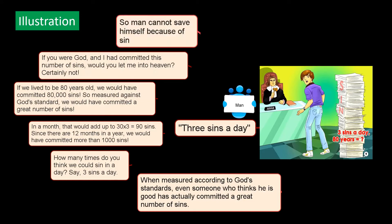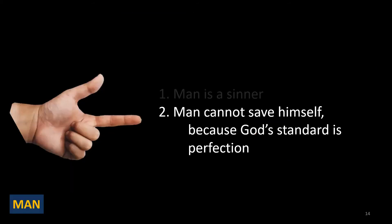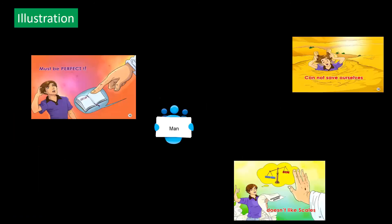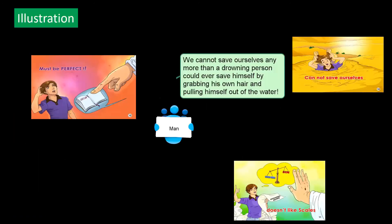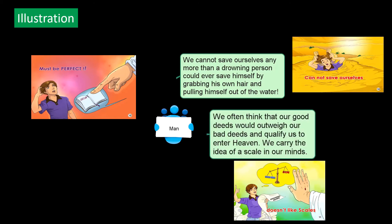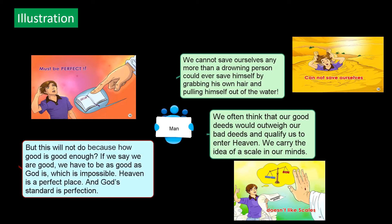So, man cannot save himself because of sin. Man cannot save himself because God's standard is perfection. We cannot save ourselves any more than a drowning person could save himself by grabbing his own hair and pulling himself out of the water. Now, we often think that our good deeds would outweigh our bad deeds and qualify us to enter heaven. Many people think this way: I sinned, but my good deeds will outweigh them. We carry the idea of a scale in our minds, but God doesn't use scales. How good is good enough? If we say we are good, we have to be as good as God is, which is impossible. Heaven is a perfect place and God's standard is perfection.